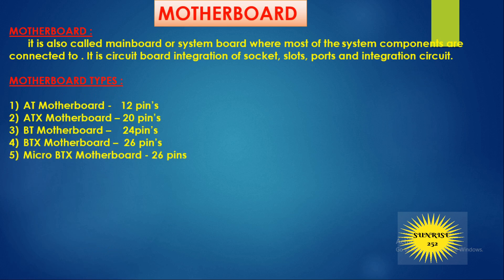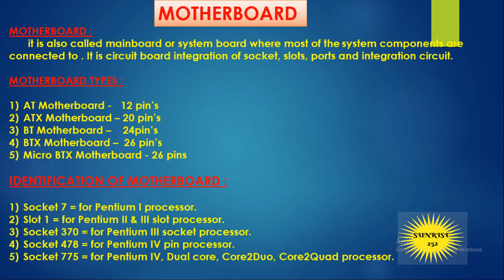There are different types of motherboard. The first one is the AT motherboard, which has 12 pins — AT stands for Advanced Technology. The second is the ATX motherboard with 20 pins — ATX stands for Advanced Technology Extended. The third is the BT motherboard with 24 pins — BT stands for Balanced Technology. The fourth is the BTX motherboard with 26 pins — BTX stands for Balanced Technology Extended. The fifth is the Micro BTX motherboard, also with 26 pins.